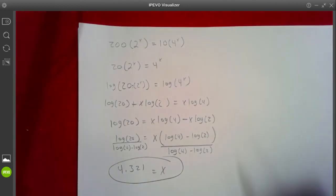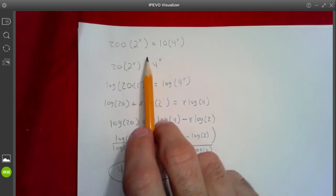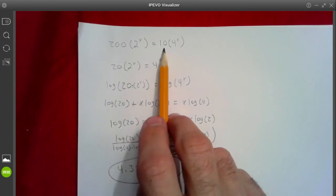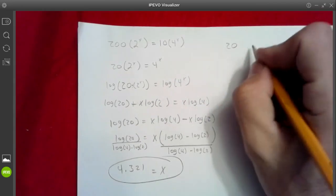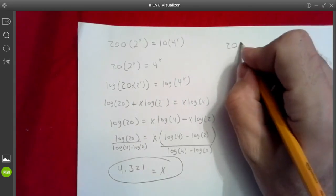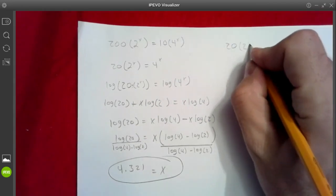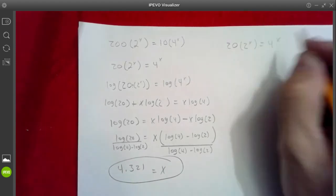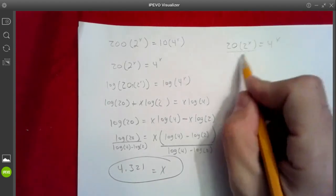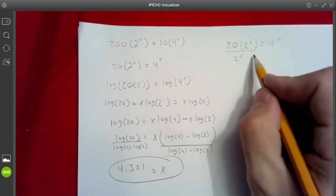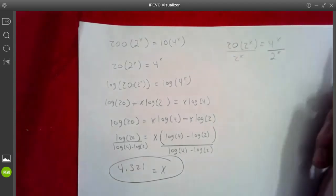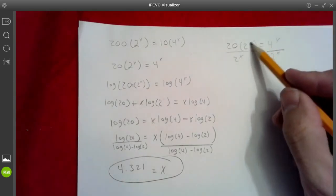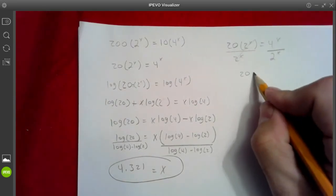Now, you could have... Like, what I did here was I divided by 10, right? To get with 20. Now, if I wanted to make this problem even simpler, I could have divided by 2 to the x. If I divide by 2 to the x, of course, they're just going to cancel on the left hand side. They'll cancel over here, so that leaves me with 20.